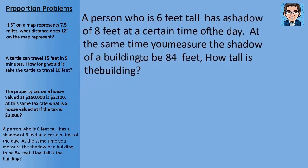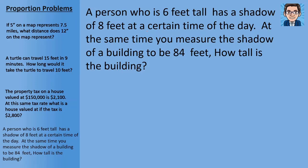All right. And the last problem, a person who is 6 feet tall has a shadow of 8 feet at a certain time of day. And at that same time, you measure the shadow of a building to be 84 feet. So how tall is the building going to be? So to set up our proportion, we want to do the height and then the shadow. All right. So the person, let's do the person. The person is 6 feet tall and their shadow is 8. If we set that equal to, we don't know the height of the building, but we do know that the shadow is 84.